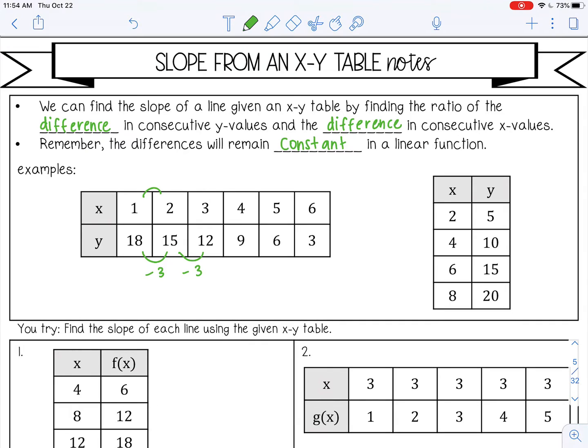For my x values, one to two, I'm adding one. And just to make sure two to three, adding one. It's a constant rate of change because linear functions have constant rates of change.